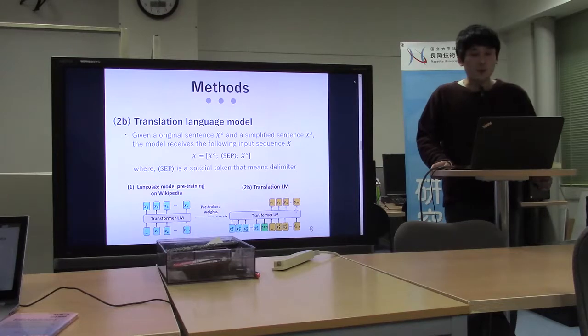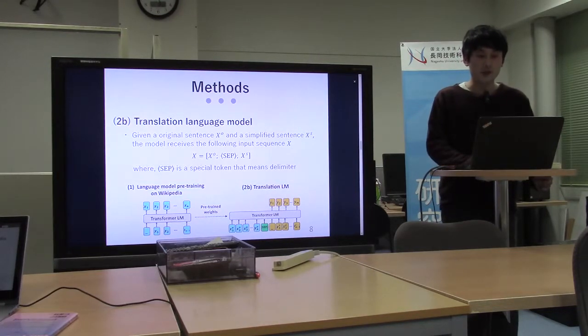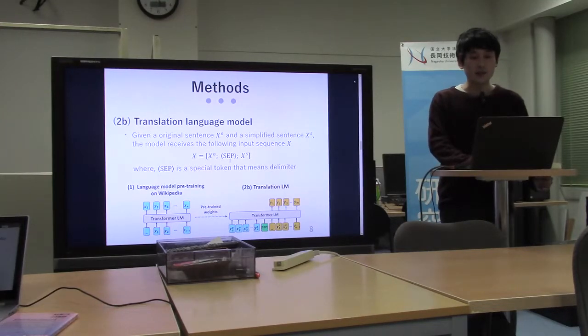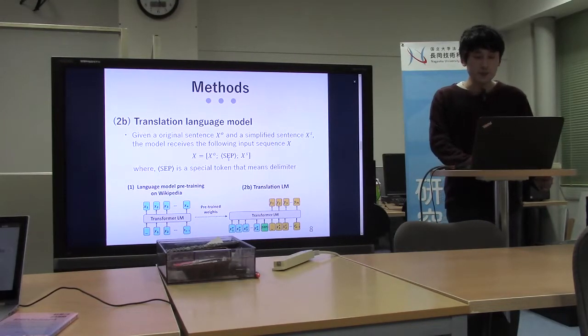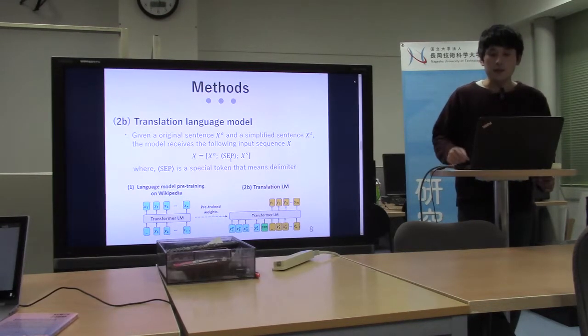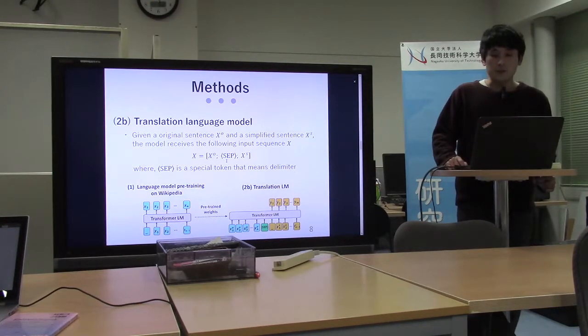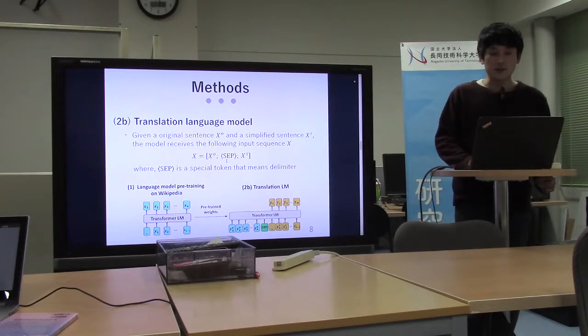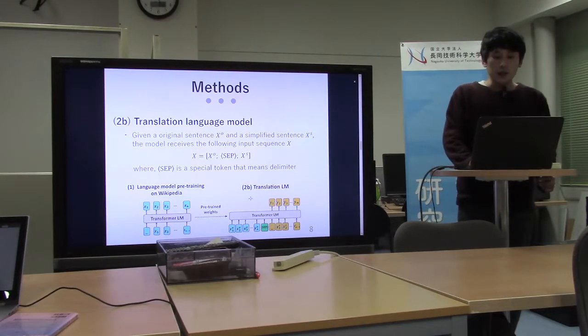The translation language model receives a joint input: the original sentence X_O and simplified sentence X_S separated by a special delimiter token. When the delimiter token is reached, the positional embedding counter is reset.